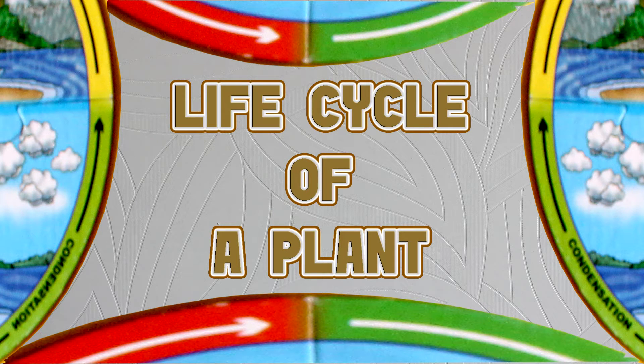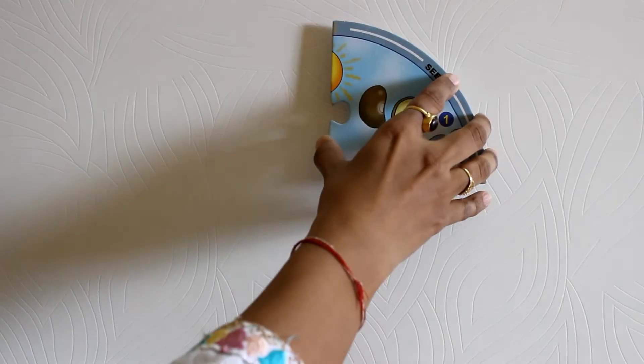The first life cycle that we are going to learn is very important and essential - that is how does a seed germinate into a plant. The first stage is the seed.